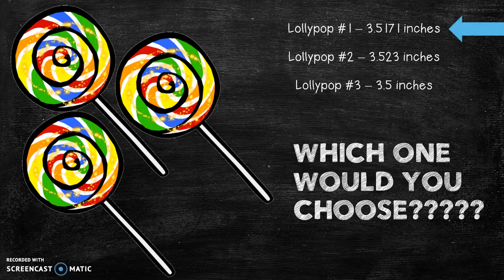A lot of people might make the mistake and say I'm gonna choose lollipop number one because look there's one two three four five digits in that number. That's more digits than in lollipop number two or lollipop number three, right? So it must be the biggest. Don't fall for that trick. Just because it has the most numbers doesn't mean it's the biggest.